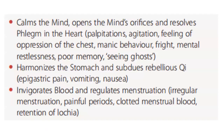PC5 calms the mind, opens the mind's orifices, and resolves phlegm in the heart: palpitations, agitation, feeling of oppression of the chest, manic behavior, fright, mental restlessness, poor memory, seeing ghosts. Harmonizes the stomach and subdues rebellious chi, so it's good for epigastric pain, vomiting, nausea. Invigorates blood and regulates menstruation, so for irregular menstruation, painful periods, clotted menstrual blood, retention of lochia.